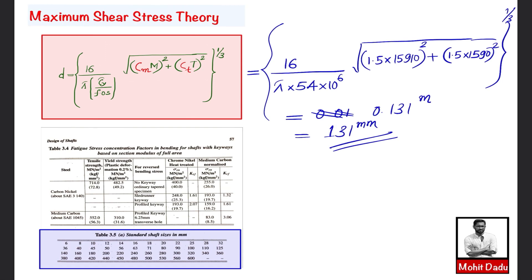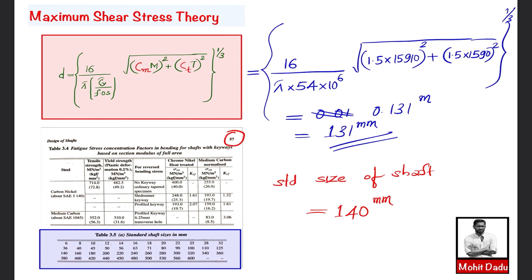In the final step, we standardize the shaft diameter. From the standard size table in the data book (page 57), the next standard size above 131 mm is 140 mm. Therefore, the final standard shaft diameter is 140 mm.